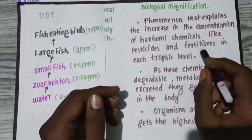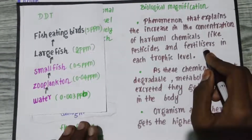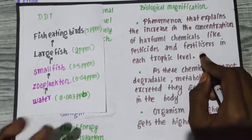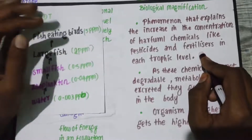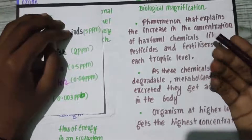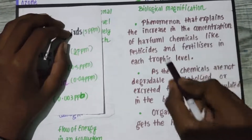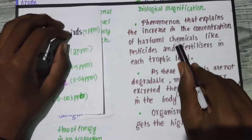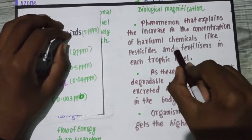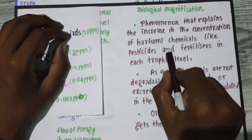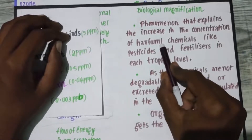We use fertilizers for crop yield. If you look at the chemicals, it will increase at each trophic level. For example, the paddy — there are chemicals in the paddy. If you look at the paddy, there will be a higher concentration of chemicals.